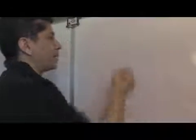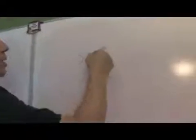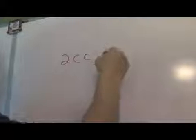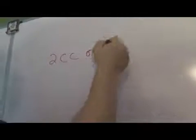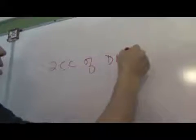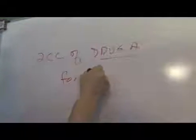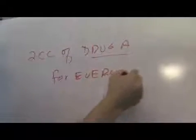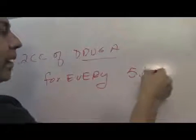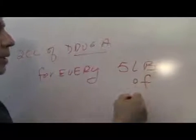For example, if the doctor prescribes the medicine, two cc's, cubic centimeters of some drug, of drug A, whatever it is, for every five pounds of weight.